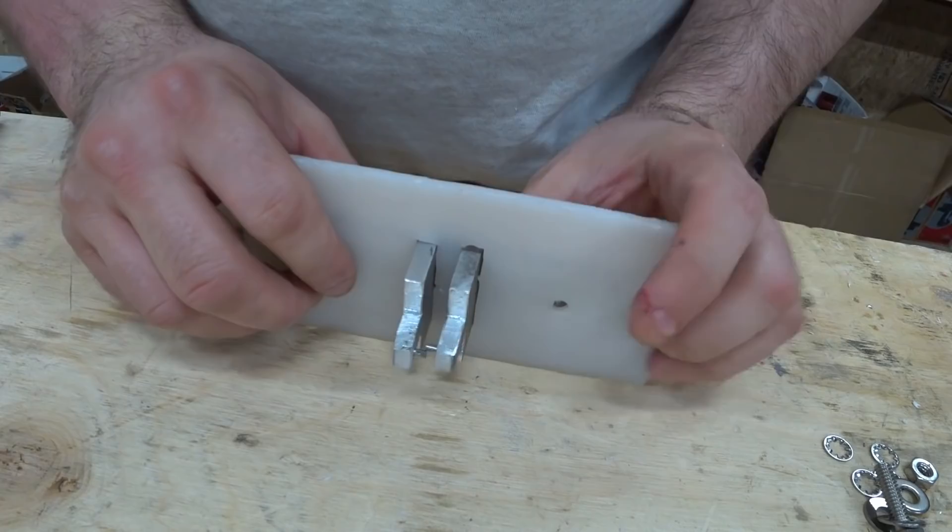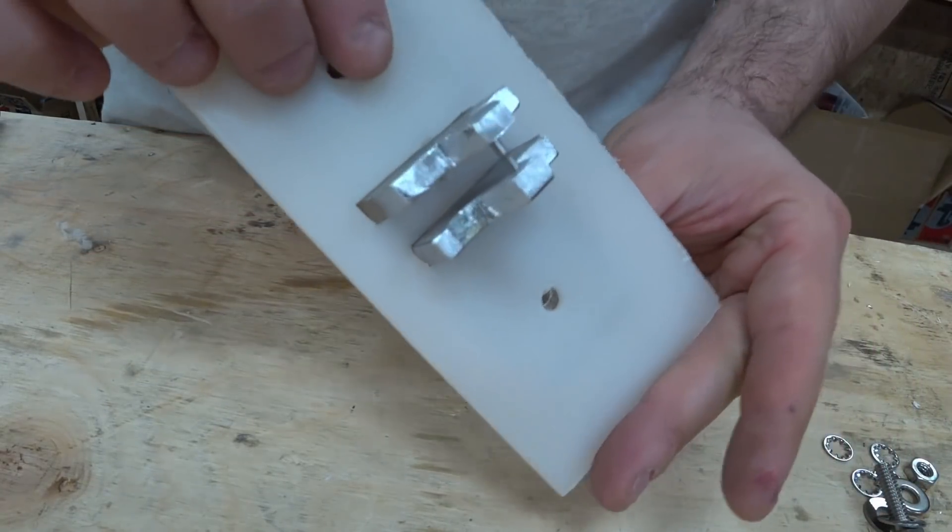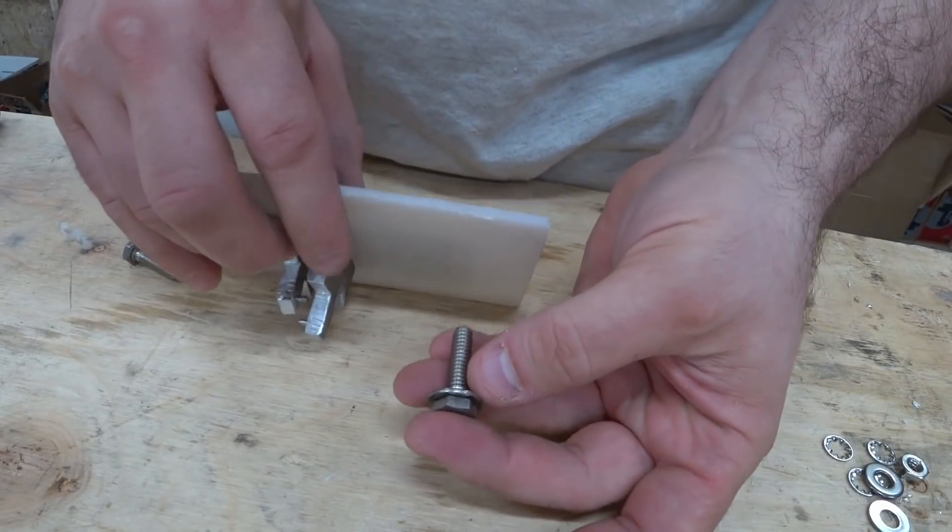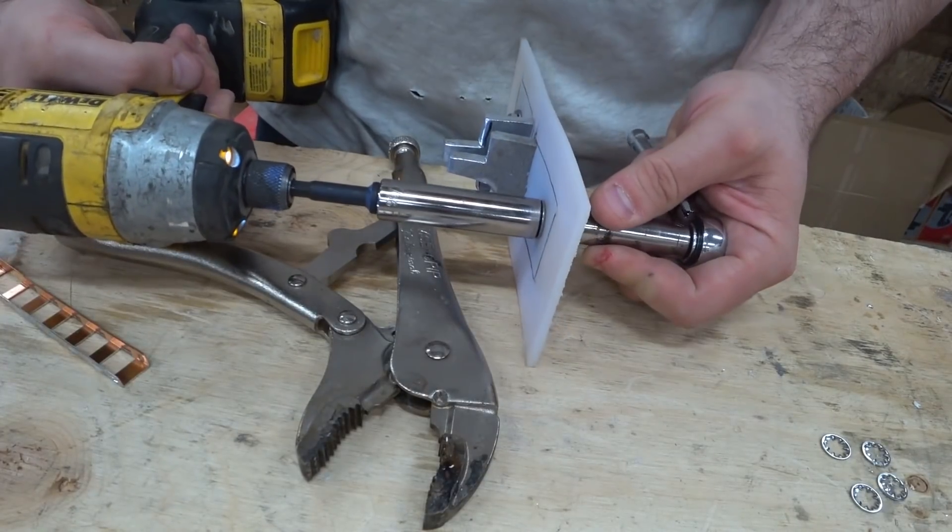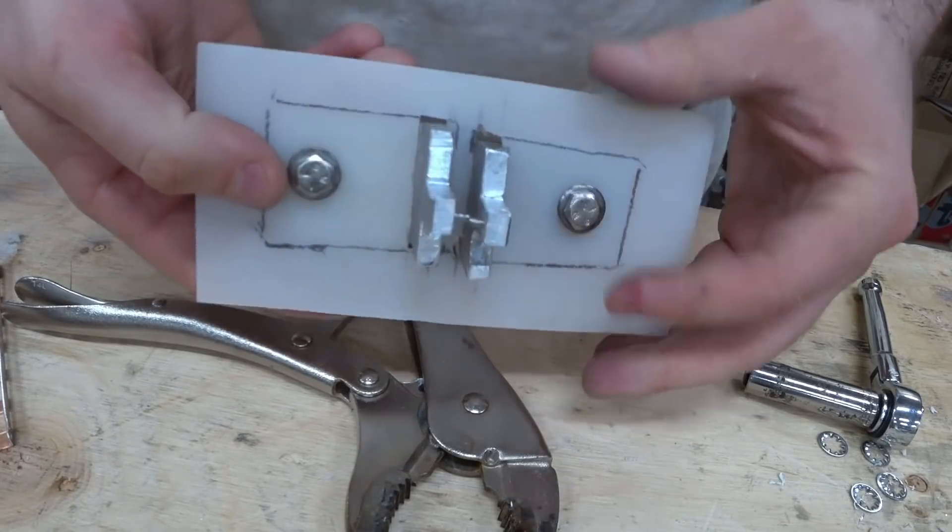And if I bolt these on, those tips should line up, which is what I'm going for. So now I have this quarter inch hardware. This is stainless steel hardware. There we go. See that? Nice.